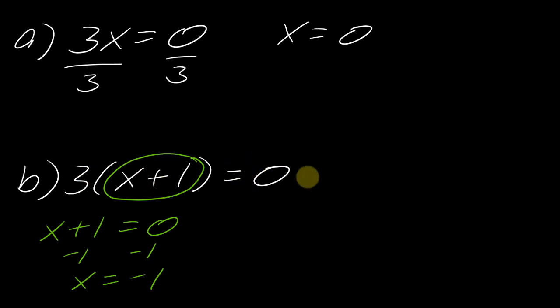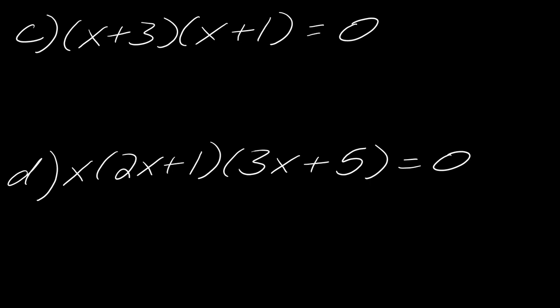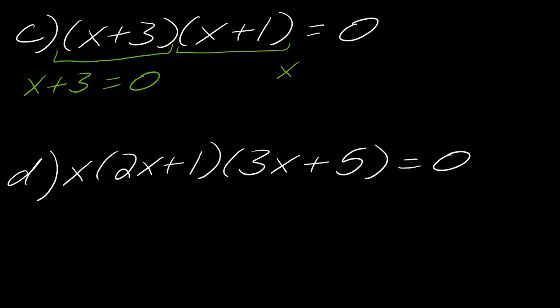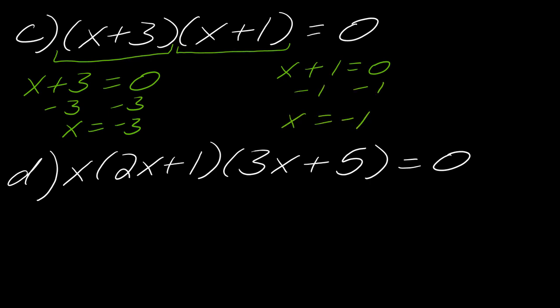From this example we see the structure of how to go about solving these types of problems. Let's extend the idea: now what I have is x plus three times x plus one equals zero. I've got two factors, and according to the zero product rule, one of them must equal zero. So I take each factor and set each one equal to zero. Solving separately: x equals negative three for one solution and x equals negative one for the other. Those are your two solutions for this equation.